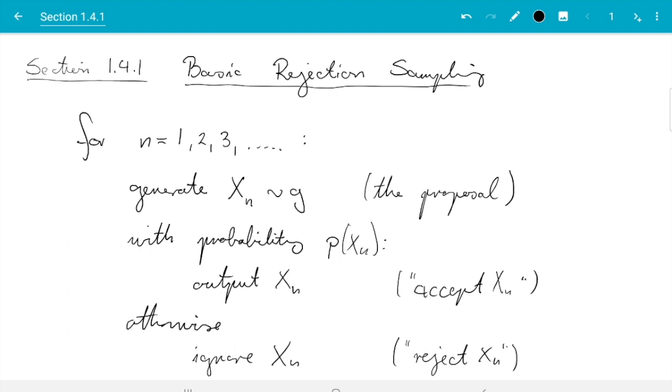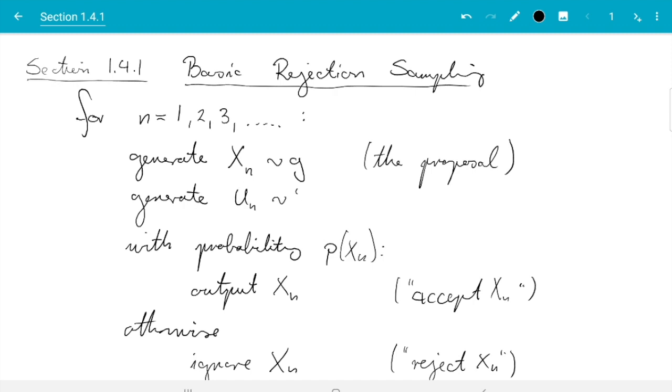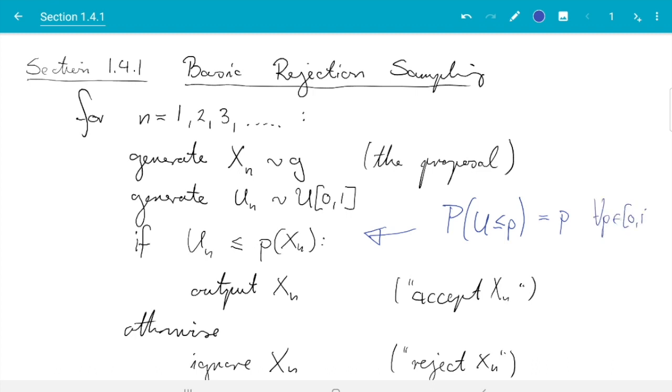Then to actually implement this in a computer we need to do this funny thing where we make a decision randomly. And there is a trick to do that technically. Namely we generate an extra random variable un which is just there to make this decision. Generate un and we take this to be standard uniform. We know how to do that because we learned this in section 1.1. And then to have something happen with probability p of xn what we will do is we will say if un is less than or equal to p of xn. Since the probability of u being less than or equal to any number p equals p for all p in the interval 0 to 1. So that's the first trick. We use this auxiliary random variable u just to make the random decision to accept or reject.